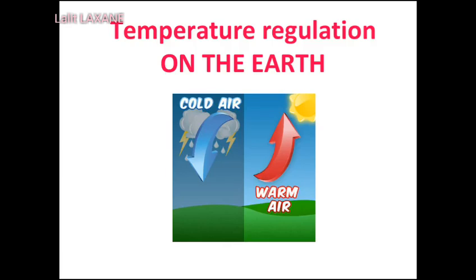Temperature regulation: The earth receives energy from the sun. This energy is reflected by the earth in the form of heat. The constituents of air surrounding the earth, such as water vapor and carbon dioxide, absorb a part of this heat and give it to the other constituents of air. As a result, the earth's surface remains warm and thereby becomes suitable for the living world. If there were no air on the earth, the average temperature of the earth's surface would have been very low.